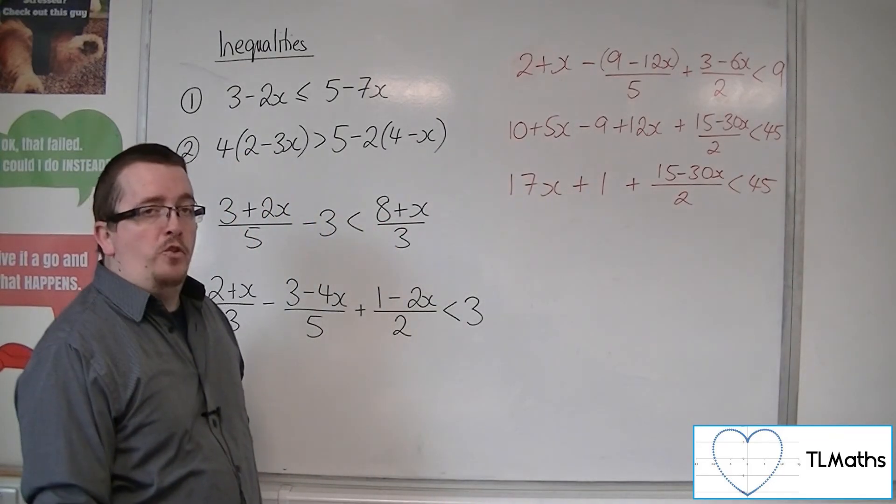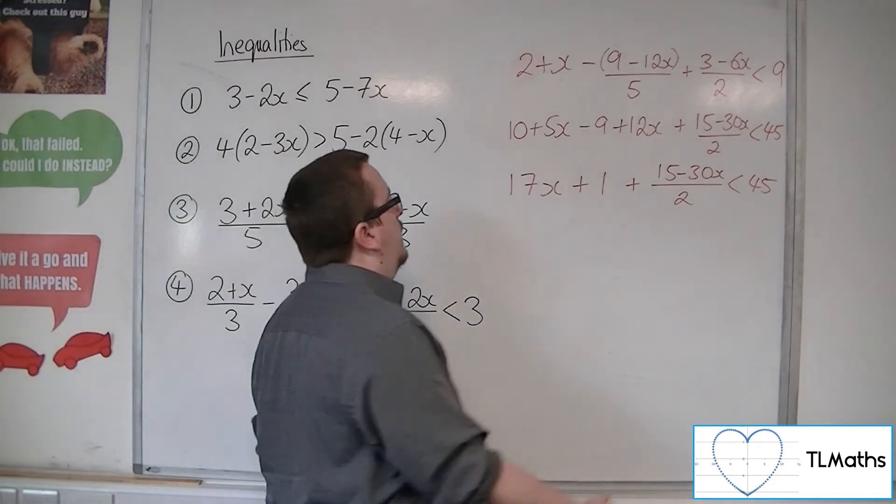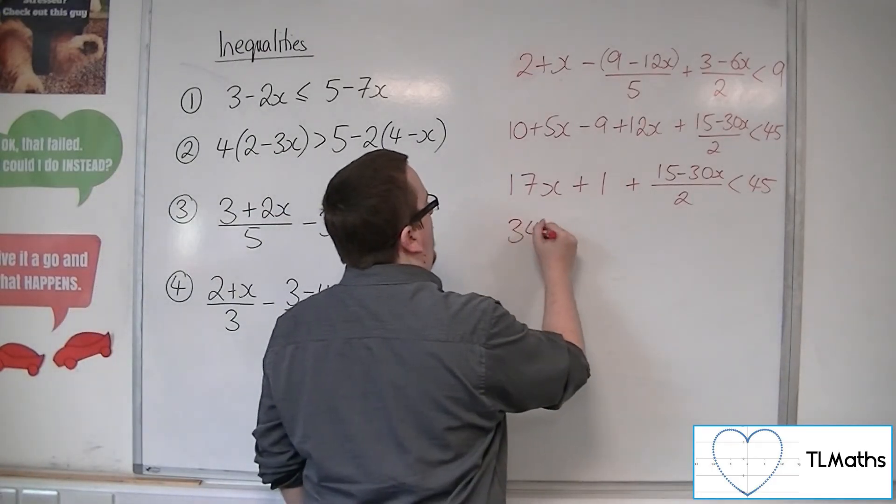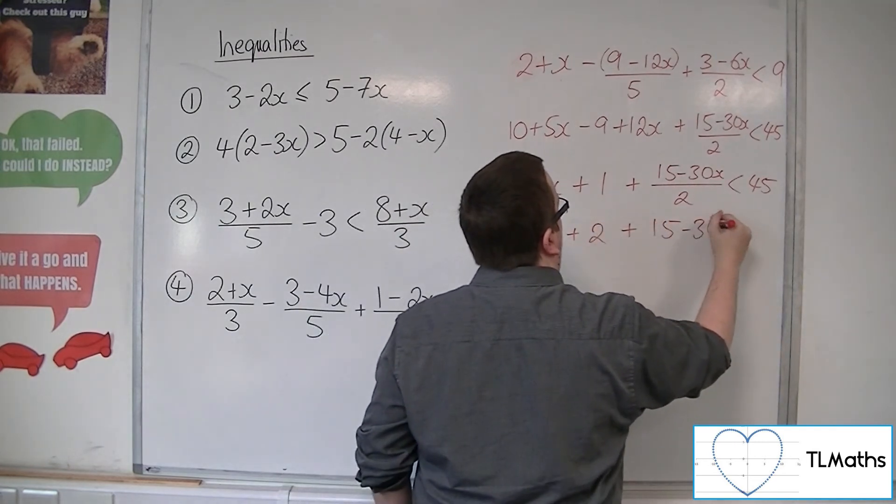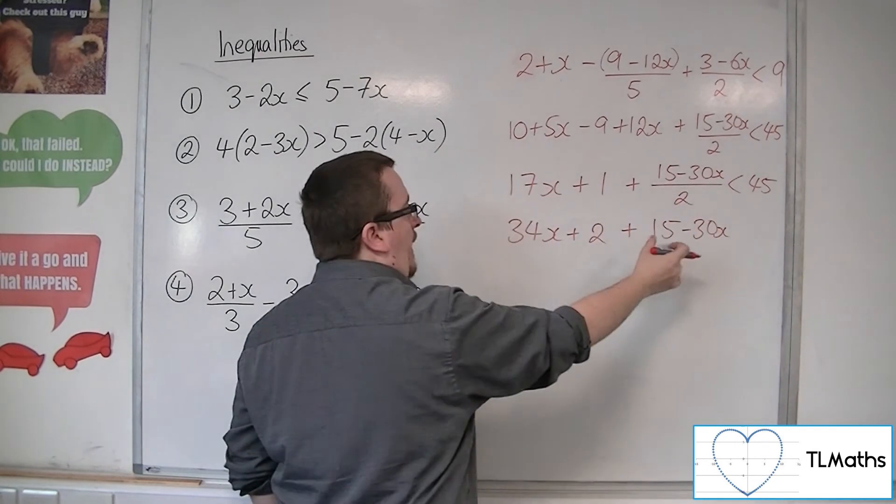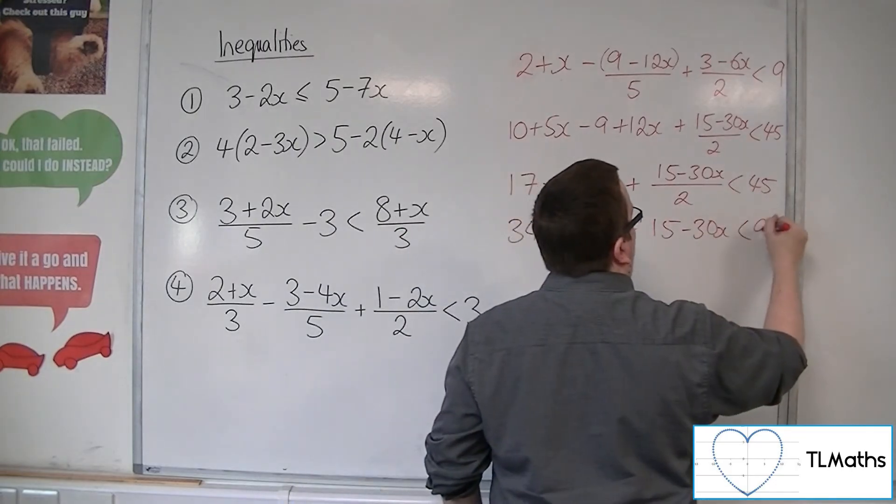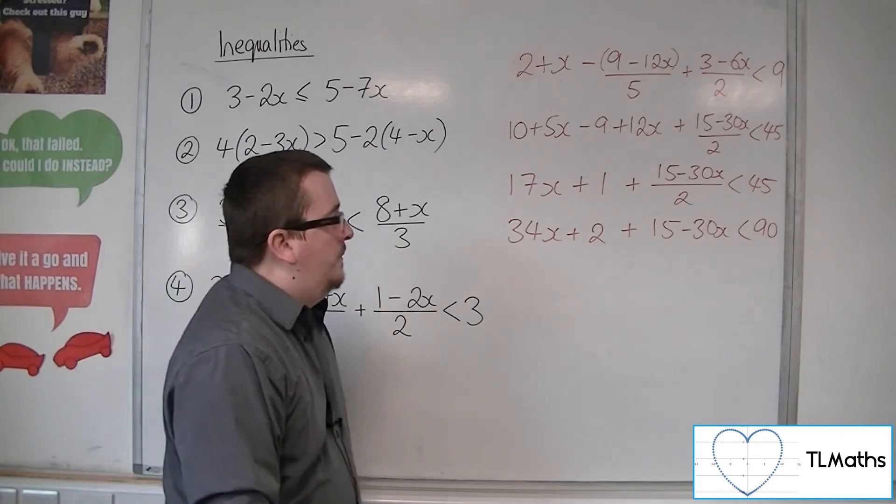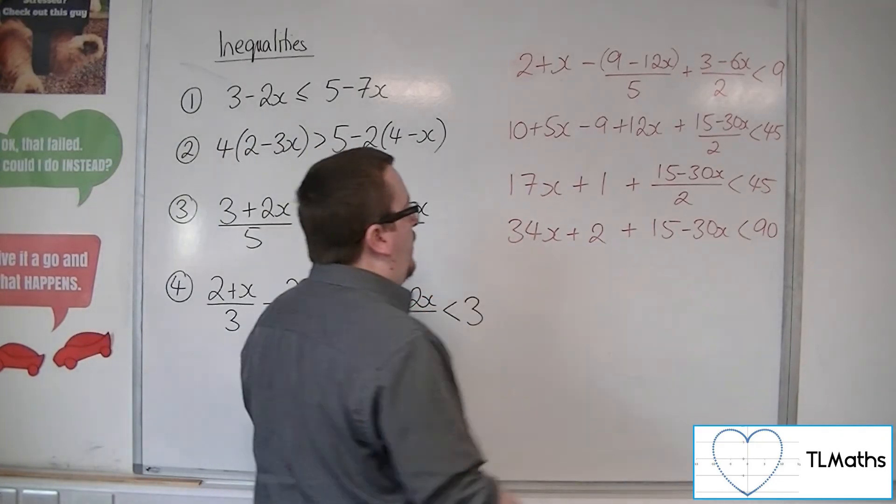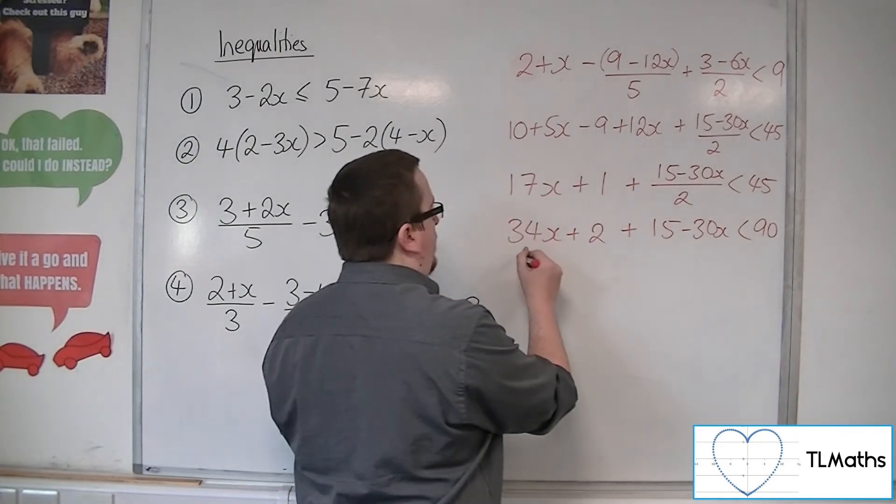So the next stage is to multiply everything through by 2. So I'm going to get 34x plus 2, plus 15 minus 30x, because the numerator just remains. And then that's going to be less than 90. So now I can tidy up the left-hand side. 34x take away 30x is 4x.